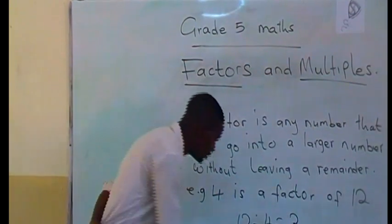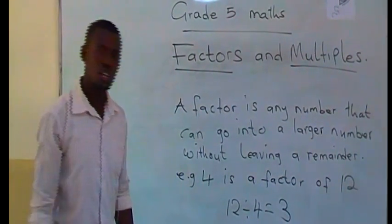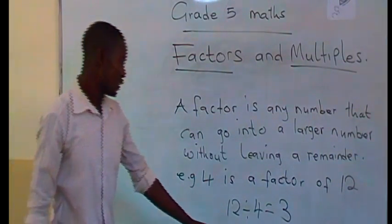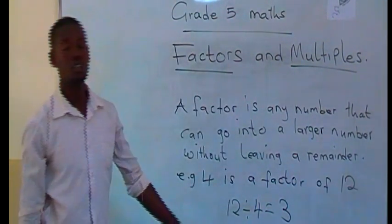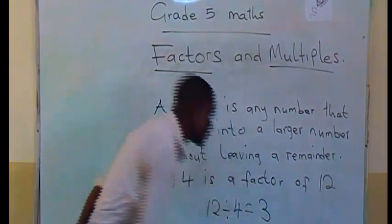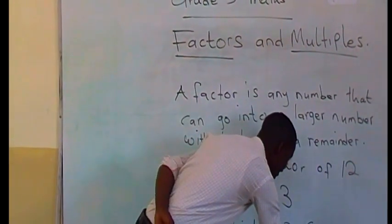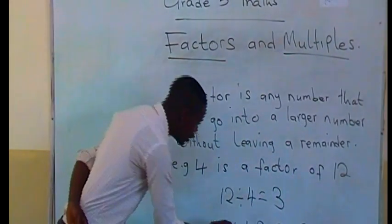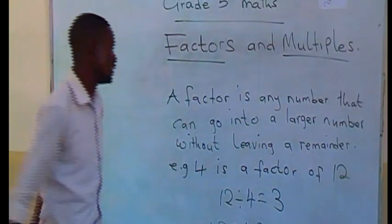We have: 1 is also a factor of 18 — it can go into 18 without leaving a remainder, 18 times. We also have 2, which can go into 18 nine times. We have 3, which goes into 18 six times. We have 6, which goes into 18 three times. And 9 can also go into 18 without leaving any remainder. So these are factors of 18.